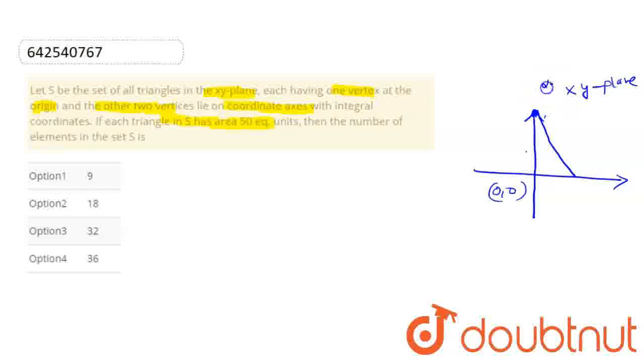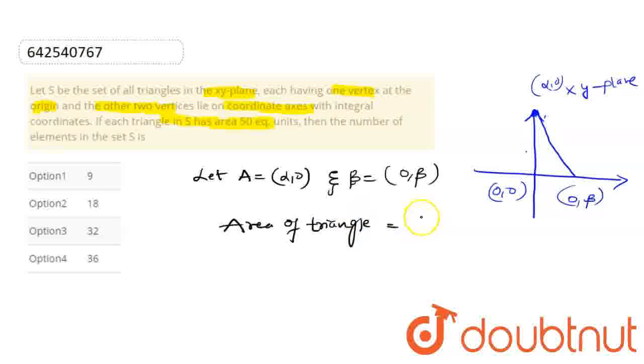Here we can see (α, 0) and here we can see (0, β). So let A = (α, 0) and B = (0, β). Here the area of a triangle is equal to half times base times height.